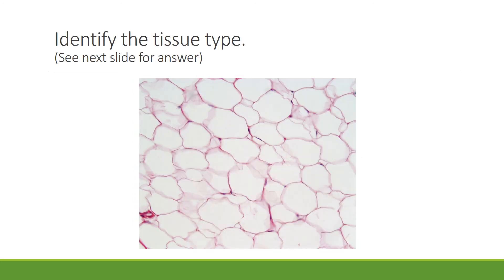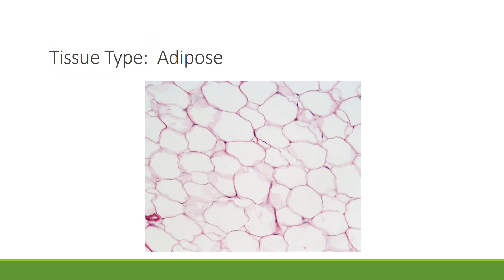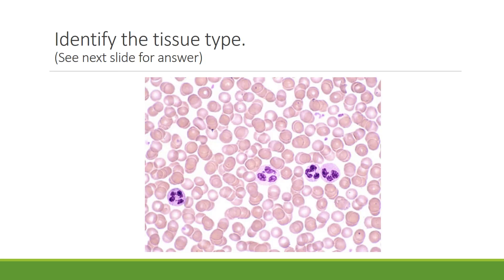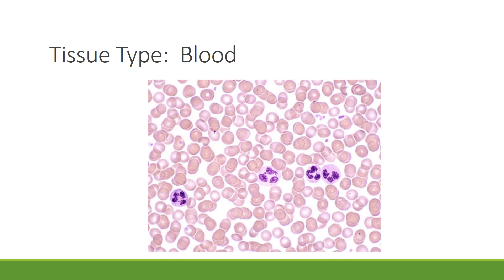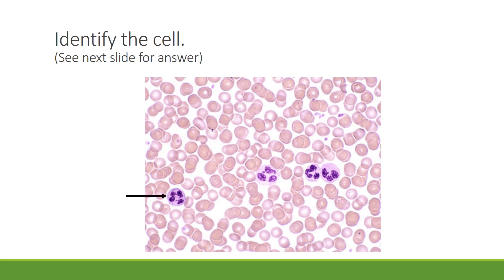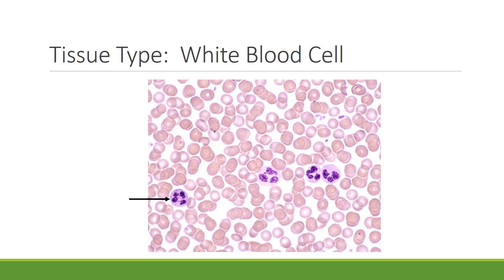Can you identify this tissue? These are adipose or fat-storing cells. Can you identify this tissue? These are human blood cells — the majority are red blood cells; in addition, there are four white blood cells and numerous platelets. Can you identify the cell indicated in this slide? The largest blood cell is the white blood cell, also known as a leukocyte. Its main function is fighting infection.